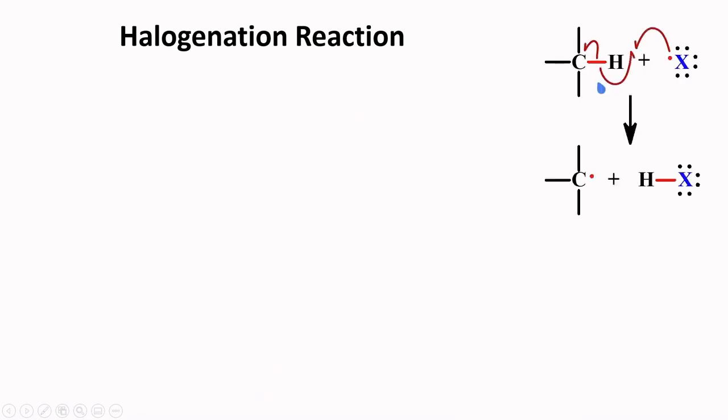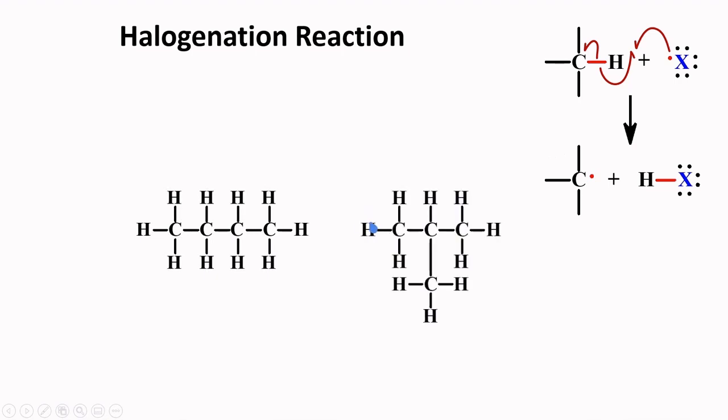For a simple alkane such as methane, it is easy to judge the outcome of a halogenation reaction. There is only one type of hydrogen that will be taken. But for more complex alkanes such as butane or 2-methylpropane, it becomes a bit complicated. Which of these hydrogens will be taken to form the radical? For butane, there are two types of hydrogens, a primary and a secondary hydrogen. Take note that based on the symmetry of the molecule, this hydrogen is identical to this one, and this hydrogen is identical to this one.